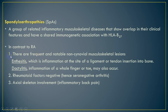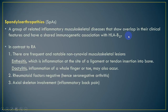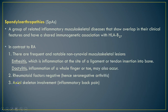These sites include Enthesitis, defined as inflammation at the site of ligament or tendon insertion into bone. Dactylitis — inflammation of a whole finger or toe — may also occur. In seronegative Spondyloarthropathy, the rheumatoid factor should be negative. They all share axial skeleton involvement, meaning spinal column involvement or inflammatory back pain.